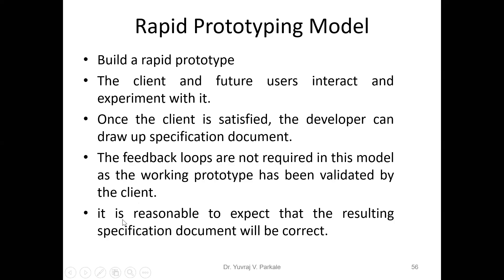It is reasonable to expect that the resulting specification document will be correct because we gave the product to the customer and asked whether they are satisfied. If not satisfied, we make changes; if satisfied, we draw the specification from that product and accordingly design the next products for the customer. Rapid means creating or fabricating your prototype quickly, handing it to the client, and making changes to the final product accordingly.